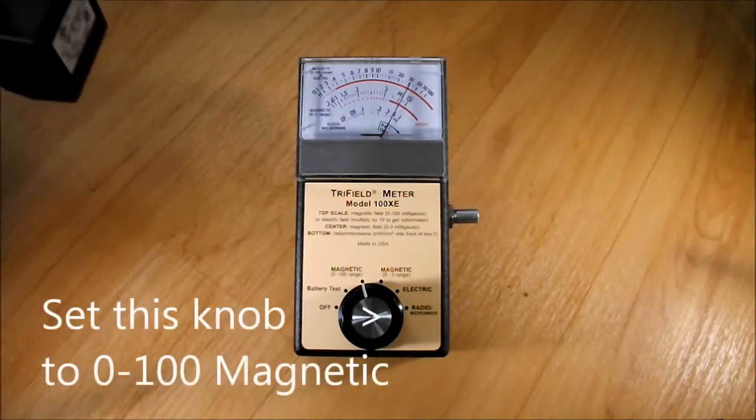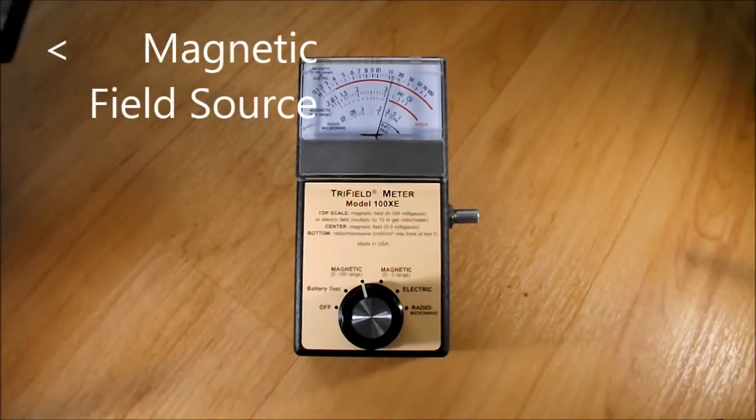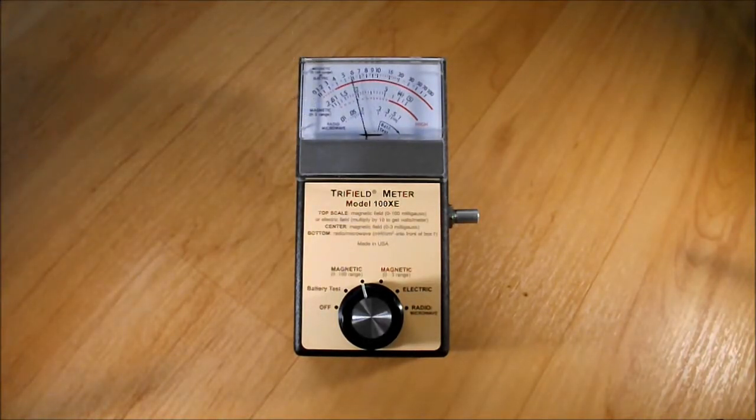First, turn the black knob to magnetic 0 to 100. Bring a source of magnetic field towards the meter until the needle just reads 10 milligauss.